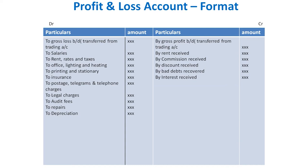Just like a trading account, the profit and loss account has two sides: the debit side and the credit side. Each side has two columns — particulars and amount. The debit side is meant to record all kinds of indirect expenses and losses, whereas the credit side records all indirect incomes.